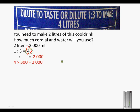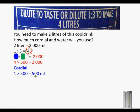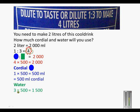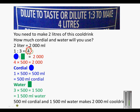4 times 500 is equal to 2000. So the cordial is the one part and water will be the three parts. Cordial is 1 times 500 is 500 milliliters. Water: we take the 500 and multiply it by 3. 3 times 500 is 1500 milliliters. So we will have to use 500 milliliters of cordial and 1500 milliliters of water to get 2000 milliliters of cold drink.